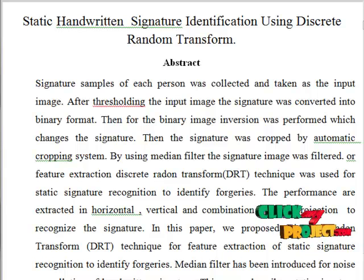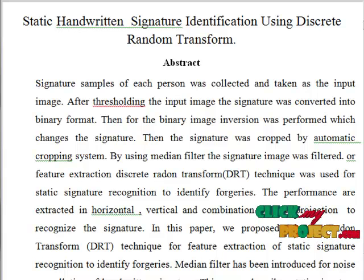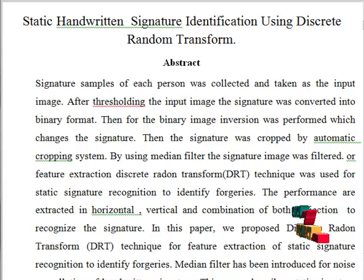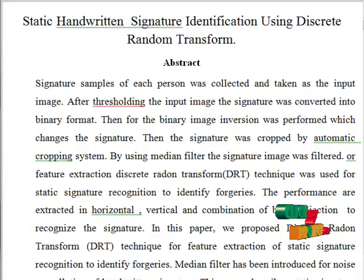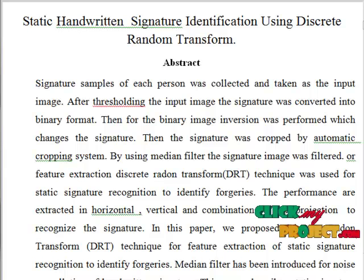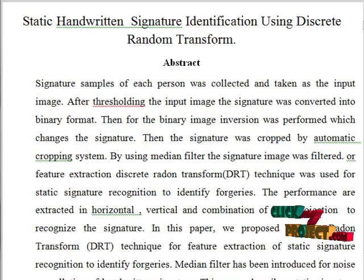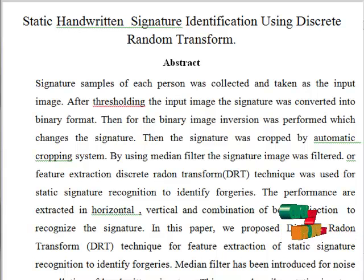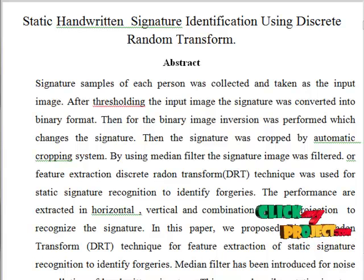Then we transfer the input image to binary image. Here, static handwritten signature was recognized to identify the forgery images. The advantage of this process is that the EER rate is lower, meaning the system performance will be better. EER means equal error rate, and moreover, this method is more effective and reliable.